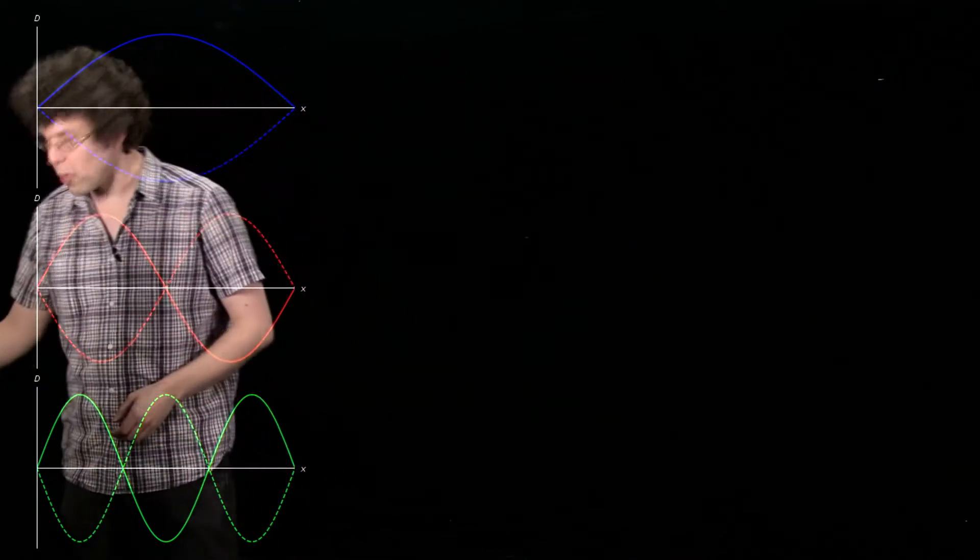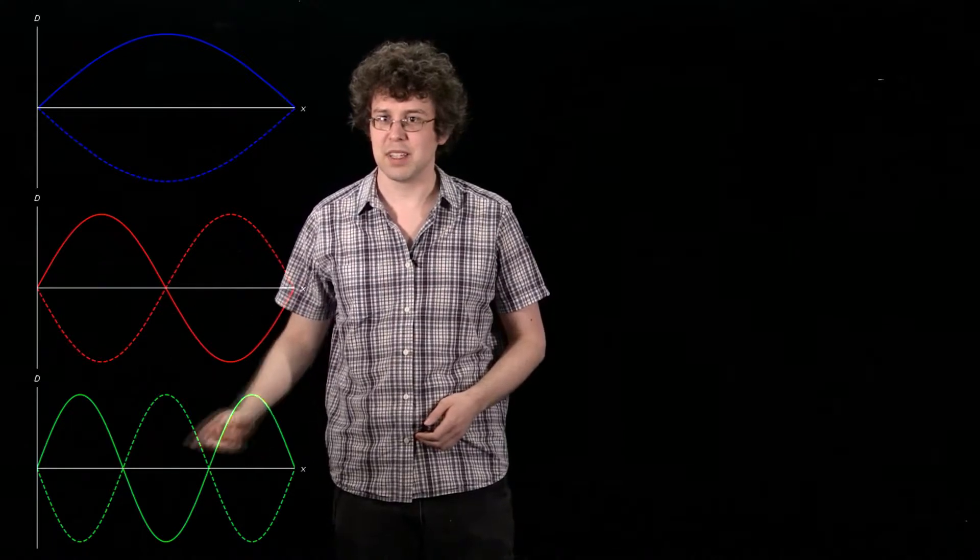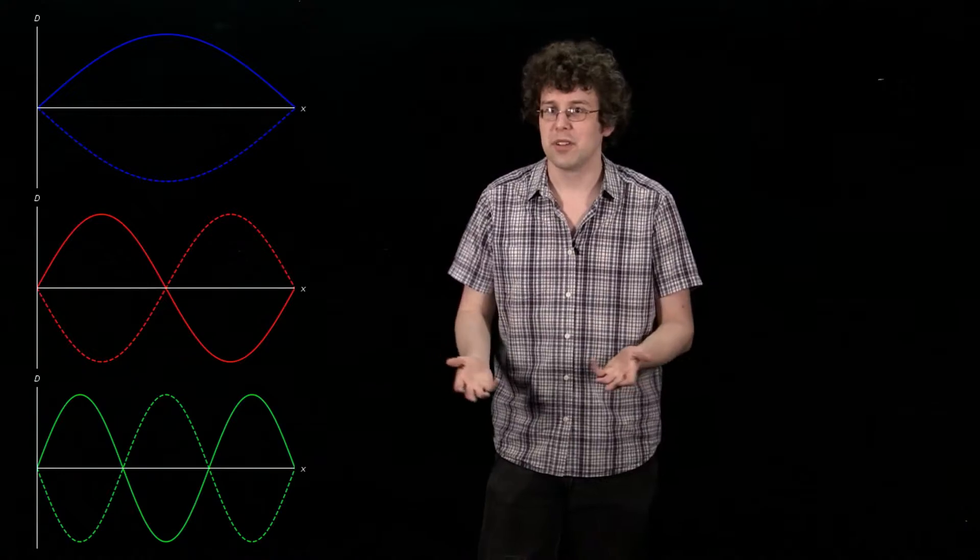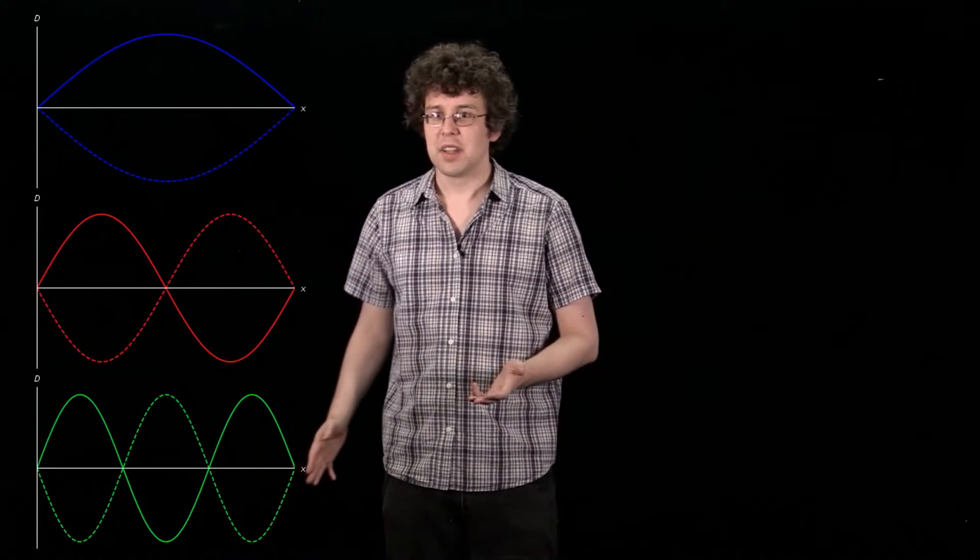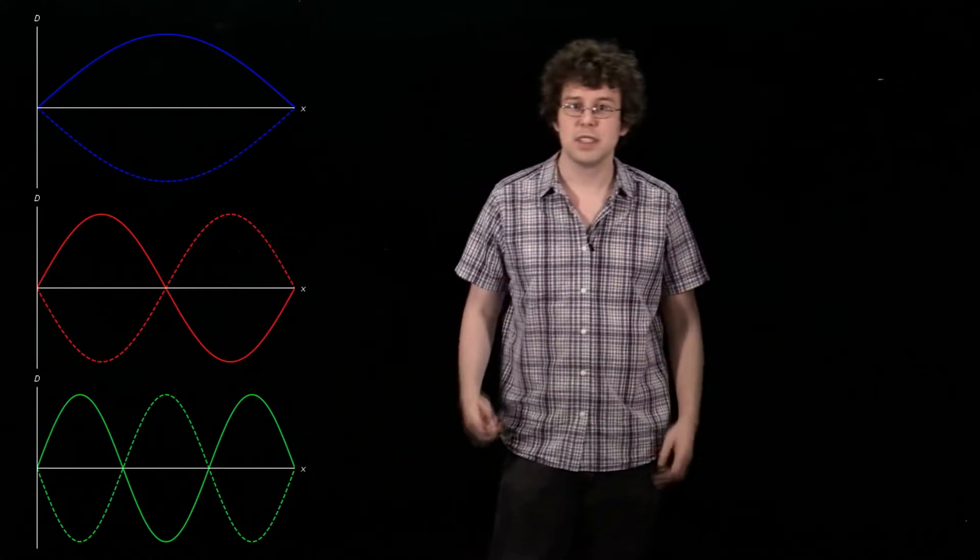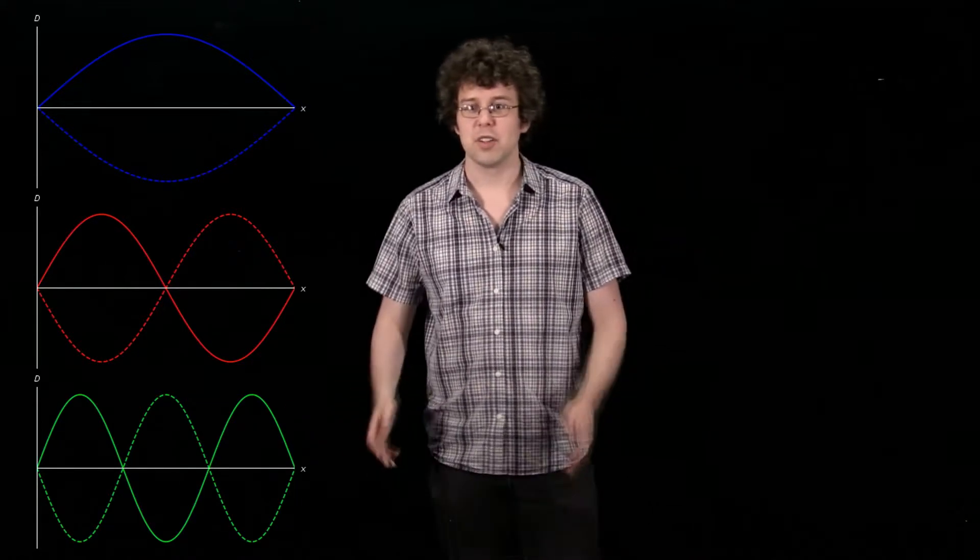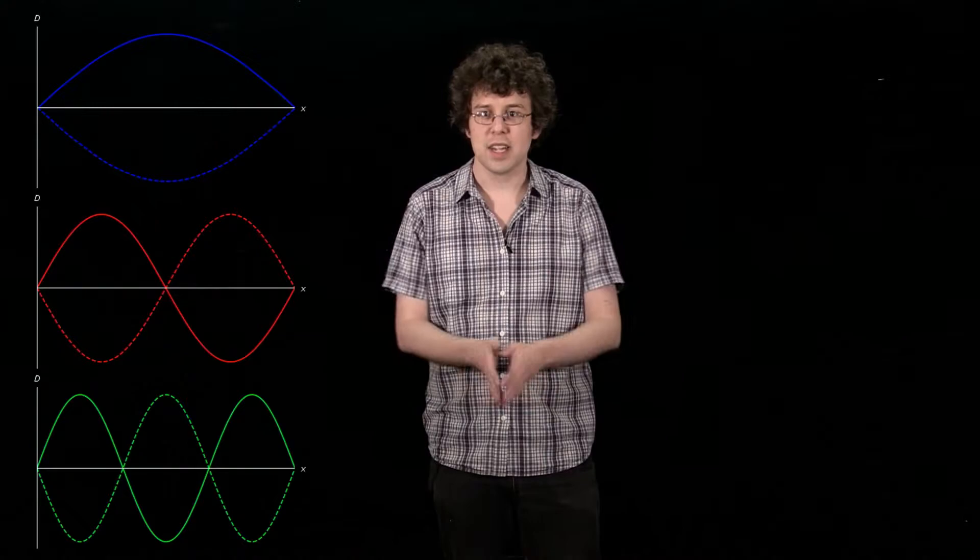So there's a few things to point out about this. These stationary points here and here and the ones in the middle, here, here, here, are called nodes. The word node simply meaning that the displacement of our wave is zero at those points, no matter what the time is. At the start, at the end, everywhere in between, it's always, always zero.